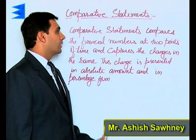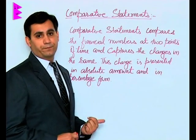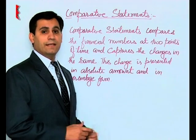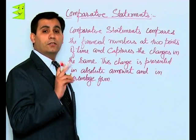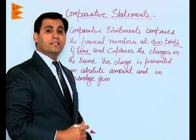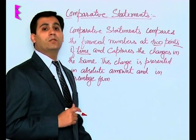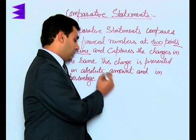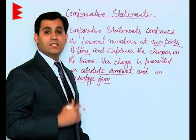Comparative statements compare the financial numbers at two points of time and capture the changes in the same. This change is presented in absolute amount form and in percentage form. Students, analyzing this definition makes it clear that comparative statements are prepared to compare the performance of a business at two different points of time — assessing the increase or decrease in profitability or financial position. Those changes are recorded and presented both in absolute monetary form and in percentage form.